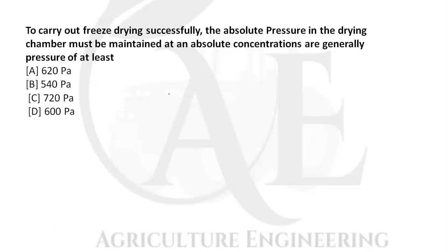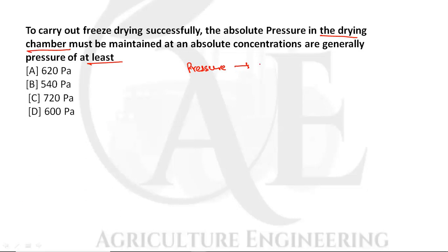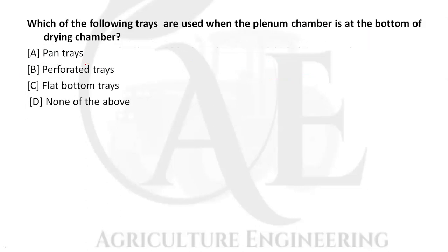Next question: to carry out freeze drying successfully, the absolute pressure in the drying chamber must be at least what value? The pressure must be maintained at at least 620 Pascal. Option A is the correct answer.